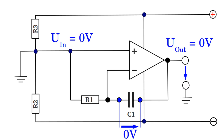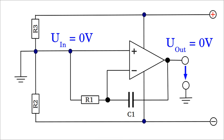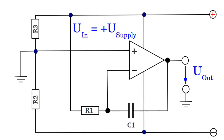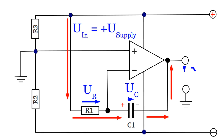Both plates of the capacitor are at the same potential. Furthermore, both sides of the resistor are at the same potential, hence no current is running through the device and the state of the circuit is stable. If the input clamp of the circuit is connected to the positive supply voltage, the capacitor gets charged via resistor 1.